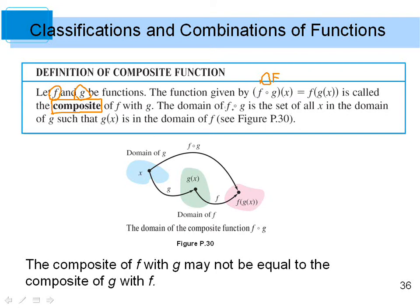Here's a picture: the domain of f of g is the set of all x. The blue blob contains the domain of g — all values in the domain of g. As we go from the blue blob to the green blob, we perform the function g, and we get the range, which is g of x. Then if we operate on those outputs with the f function, we get f of g of x. So we're composing or combining two functions to create one larger function called f of g of x.